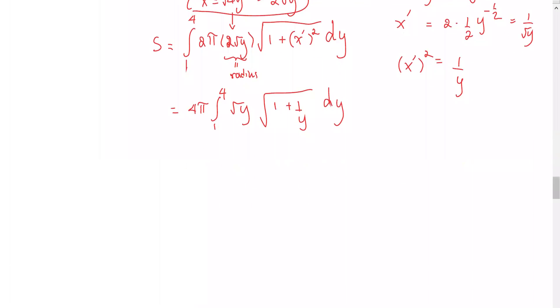Use similar technique as what we did in the earlier example. We have 4pi integral from 1 to 4 of square root y. We write the radical in the form of the radical of y plus 1 over y, with respect to y, and then separate it as the radical of the numerator divided by the radical of the denominator.